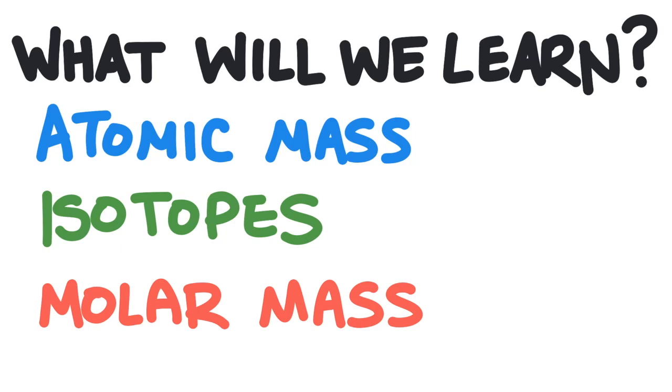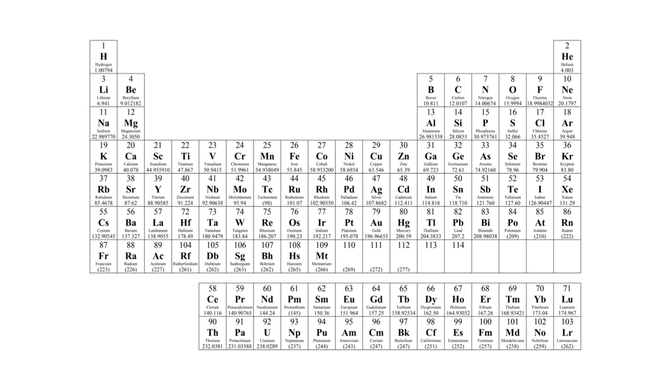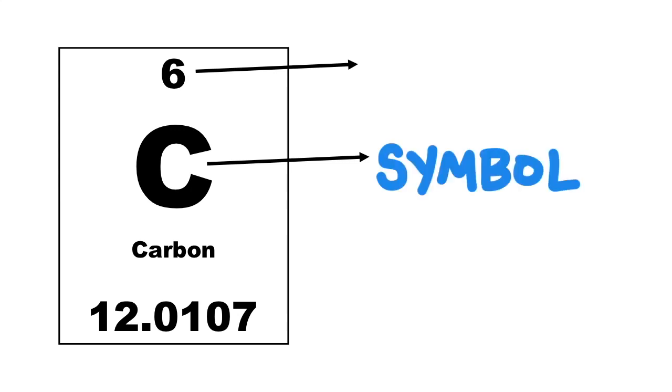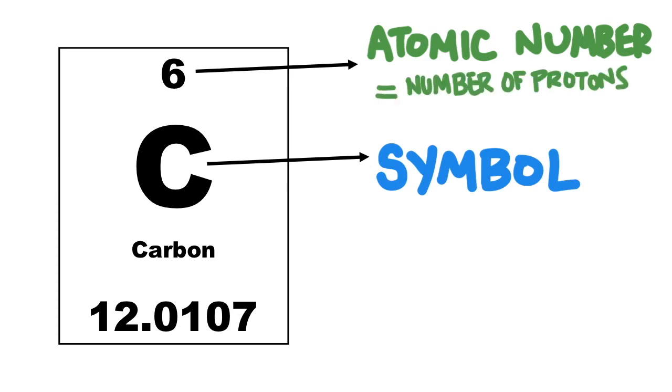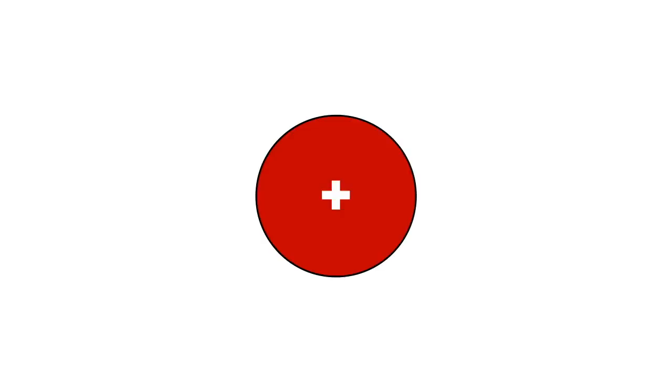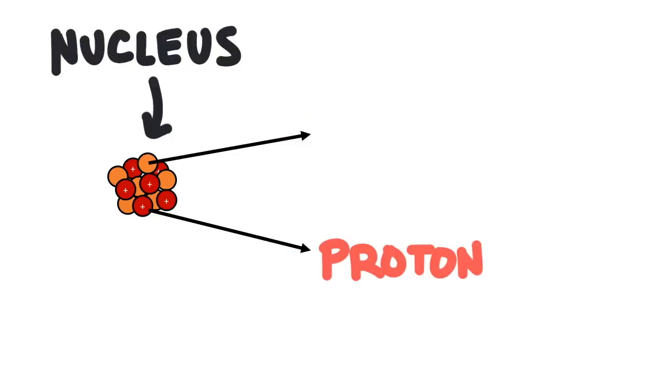Let's start by taking a look at the periodic table. Each element's square on the periodic table includes a few different pieces of data. The letter in the middle is the atom symbol and the number on top is called the atomic number. This number tells us the number of protons in the nucleus of an atom. Protons are positively charged particles that partially make up an atom. The nucleus is at the center of the atom. This is where we find the protons.